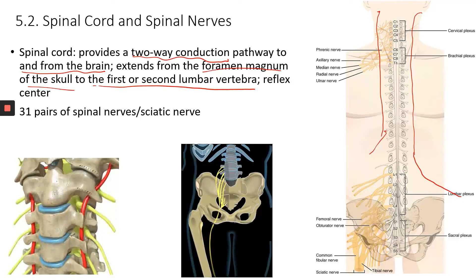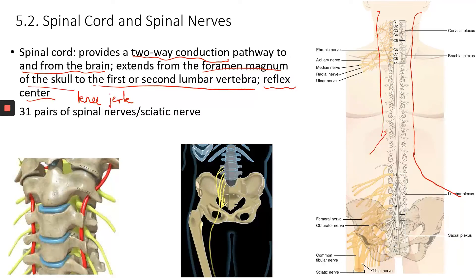It's a two-way conduction: sensory information going into the brain, motor information coming out. The spinal cord also serves as a reflex center — a lot of reflexes don't go through the brain at all and can be handled at the spinal cord level. For example, the knee-jerk reflex, where you tap the knee with a hammer and the lower leg kicks up quickly. The response is initiated by the spinal cord, which saves time because the information doesn't have to travel all the way up to the brain and back.